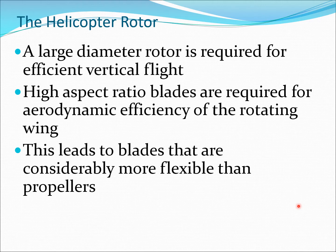The aspect ratio of the blades is high — aspect ratio being the length divided by the chord — and this is required for efficiency in terms of fluid mechanics properties for the rotating wing. Both these factors, coming from performance and fluid mechanics, lead to blades which are considerably more flexible than what you see in propellers, which are very small, have high degrees of twist, and are much stiffer.